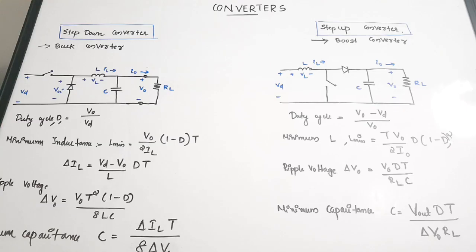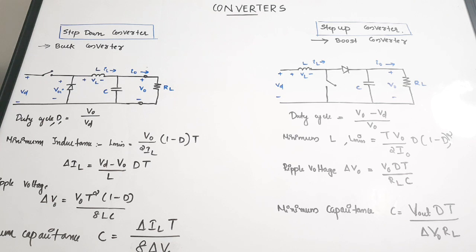This is Part 2 of the power electronics formula and concept revision series. We are going to discuss converters — specifically all important types of converters, their circuit diagrams, and important equations. The first classification is boost converter and buck converter, that is step-up and step-down converters. These two converters are DC-to-DC converters, meaning they convert a DC input voltage to another DC output voltage, either boosting or reducing the voltage level.